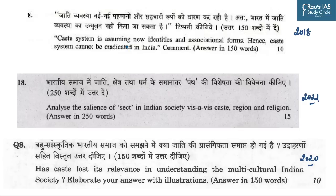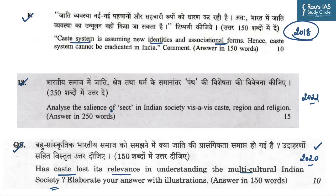Before moving on to the discussion, let us have a look at this particular slide in which you can see three questions. The first one says 'Caste system is assuming new identities and associational forms,' asked in 2018. In 2020, UPSC again asked a question on caste: 'Has caste lost its relevance in understanding the multicultural Indian society?' In 2022, it asked: 'Analyze the salience of sect in Indian society vis-a-vis caste, region and religion.' This makes it a very important topic for UPSC Mains, specifically General Studies Paper 1.